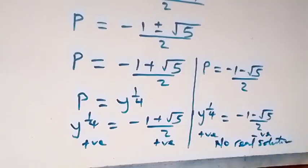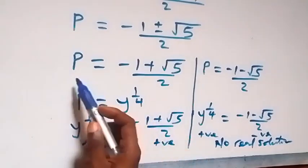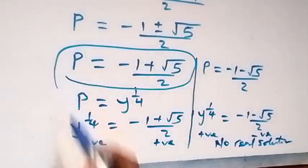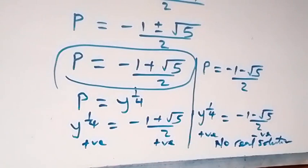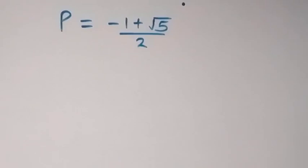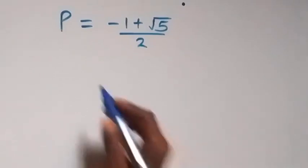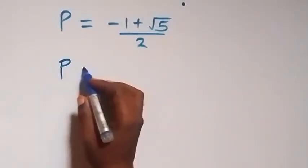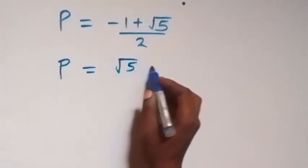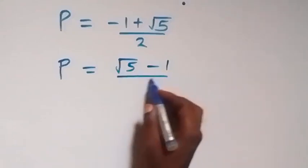We are interested in the valid solution. We solve using p equals to minus 1 plus root of 5 over 2, which we can also write as p equals to root of 5 minus 1 over 2.